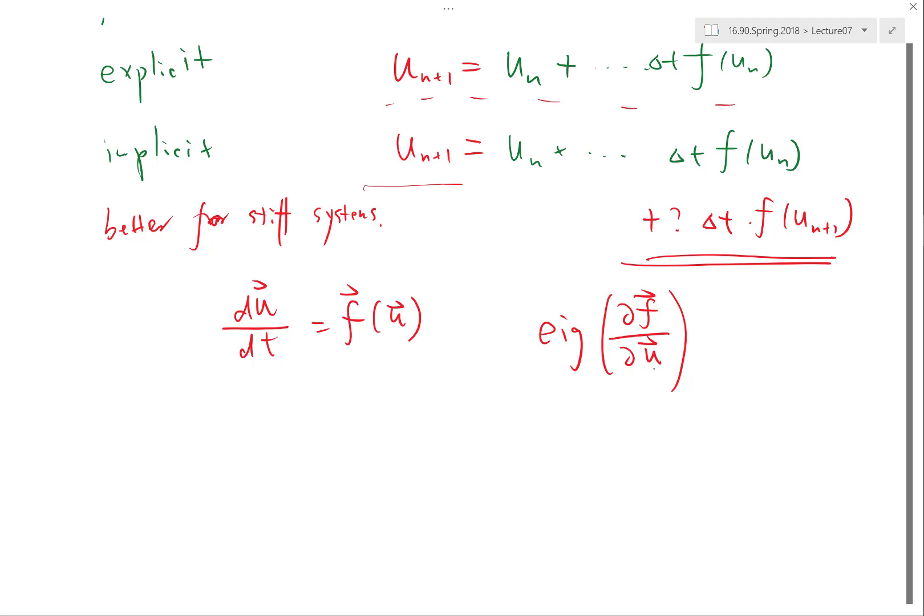And usually in this stiff system—I say usually because it's not always the case—the shortest time scale is actually not something you care that much about. Why am I saying so? Because the shortest time scales, unless it is an exactly imaginary eigenvalue which means it'll just oscillate at a very high frequency, is going to be damped down very fast. So the shortest time scales are usually the kind of time scales that if goes out of equilibrium, it's going to be going back towards equilibrium in a very fast rate.